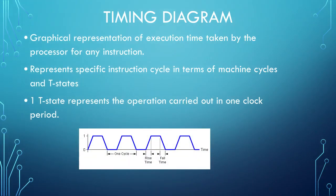Coming to the timing diagram — it is the graphical representation of execution time of the processor for any instruction, and it represents a specific instruction cycle in terms of machine cycles and T states. One T state represents the operation carried out in one clock period as shown here. The clock can have 0 value and 1 value, and here we have shown rise time and fall time as well.